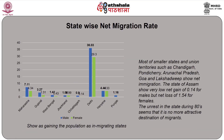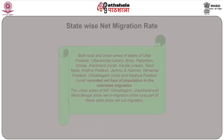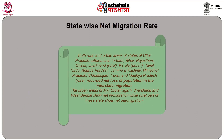The unrest in Assam during the 1980s appears to have made it no longer an attractive destination for migrants. Both rural and urban areas of Uttar Pradesh, Uttaranchal especially urban areas, Bihar, Rajasthan, Orissa, and Jharkhand in rural areas, Kerala in urban areas, Tamil Nadu, Andhra Pradesh, Jammu and Kashmir, Himachal Pradesh, rural Chattisgarh, and rural Madhya Pradesh have recorded net loss of population in interstate migration.